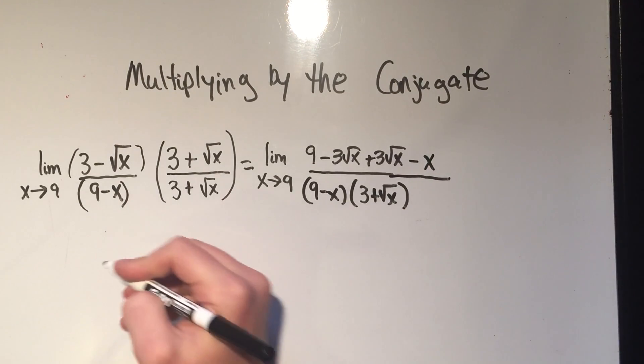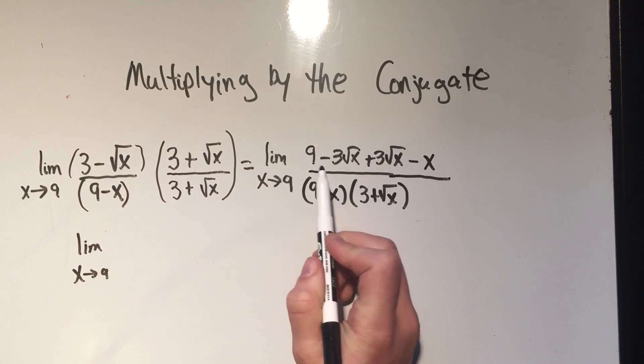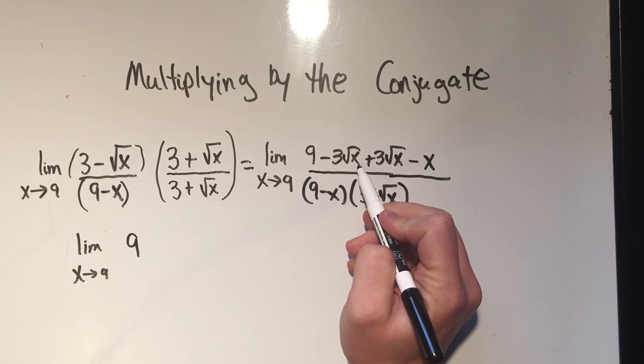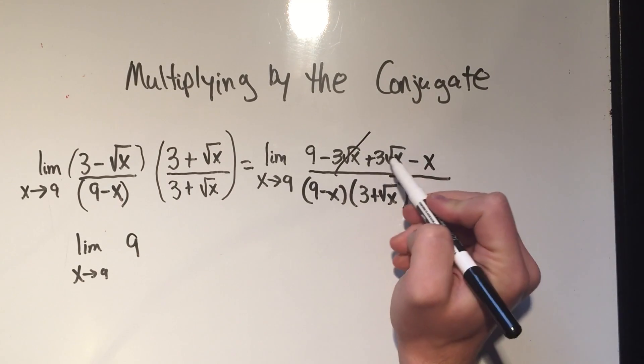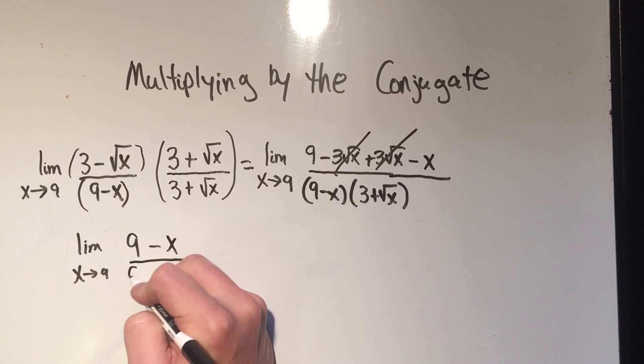At this point I simplify the numerator. I've got 9, and would you look at that, I've got minus 3 root x plus 3 root x. They cancel each other out. I'll just be left with 9 minus x in the numerator.